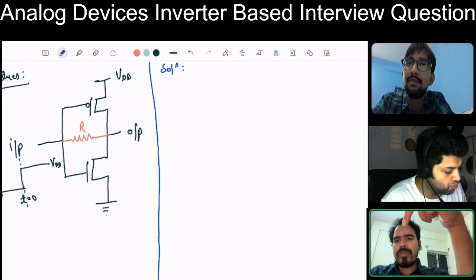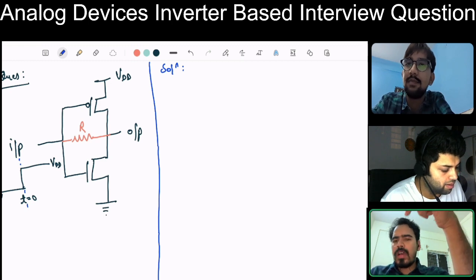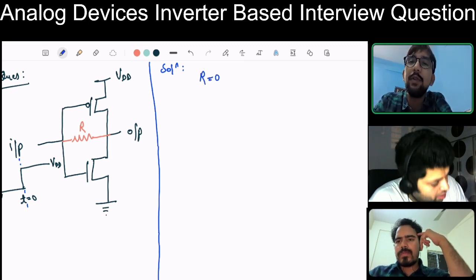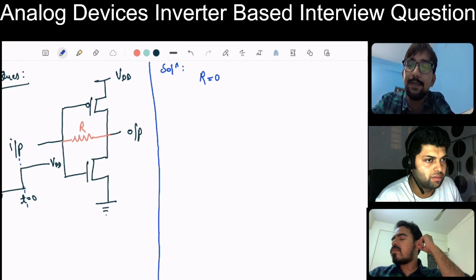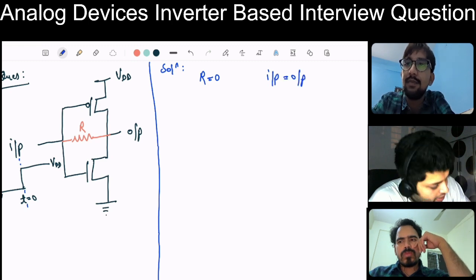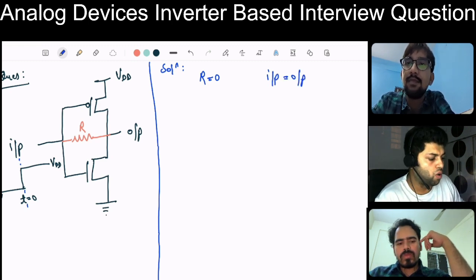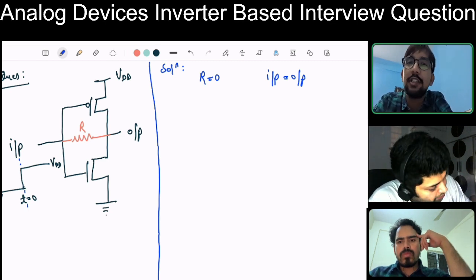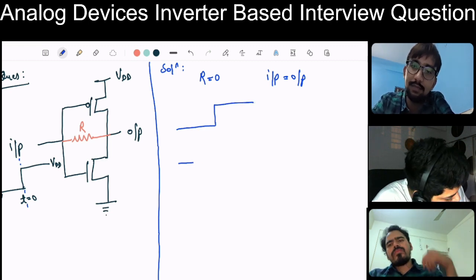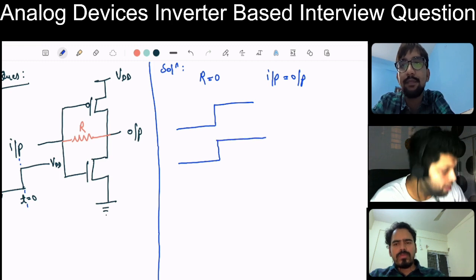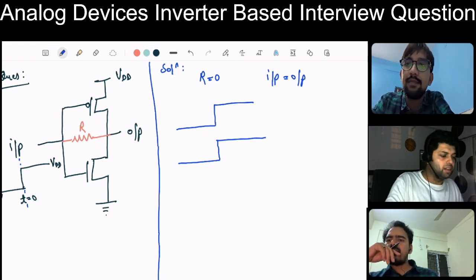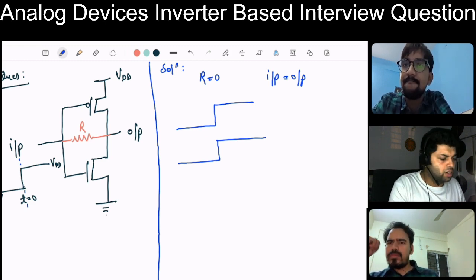Let's take R equal to zero: when R is zero, input is equal to output — it is shorted. So the output will follow the input. If the input is like this, the output will also be like this. For R equal to zero it will be symmetrical, but for lower R values it will be a bit different — we'll come to that.